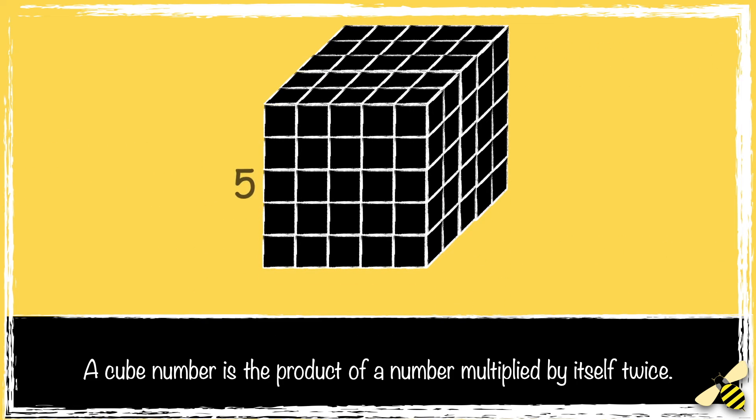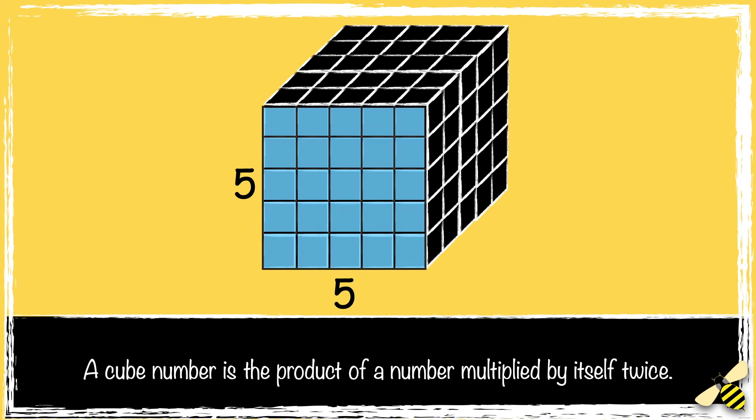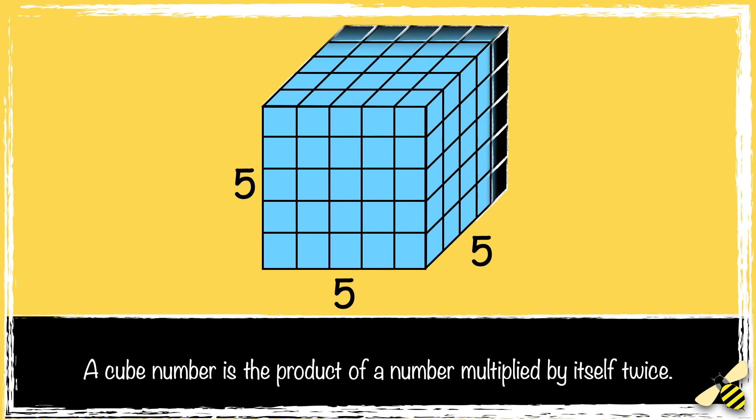So we have 5 multiplied by 5, which makes the square number 25. But in a cube number we have a third dimension. So 25 times 5 is 125.